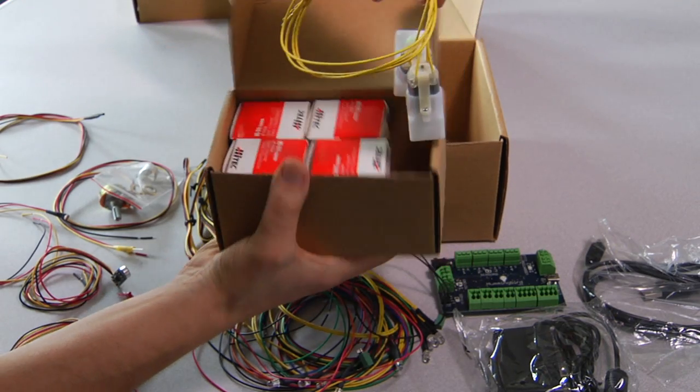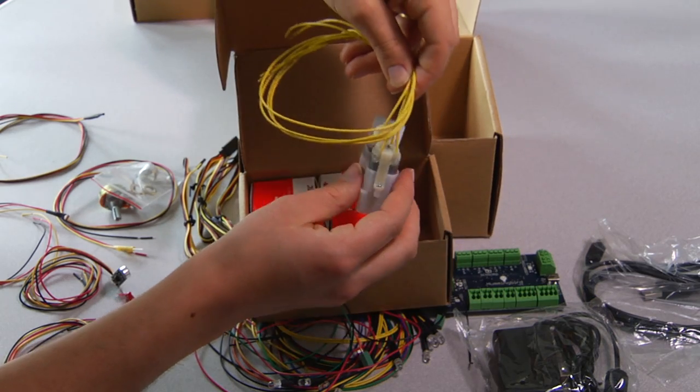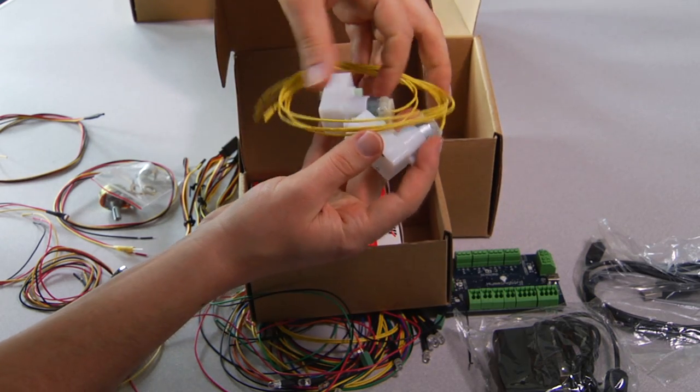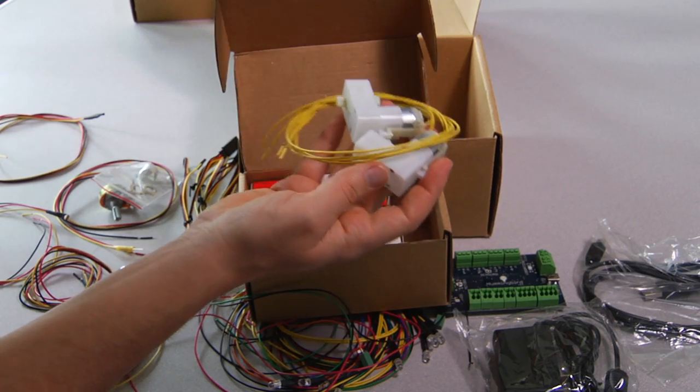The DC motors are right here. They have wires soldered onto them. And they're just good if you need some continuous rotary motion.